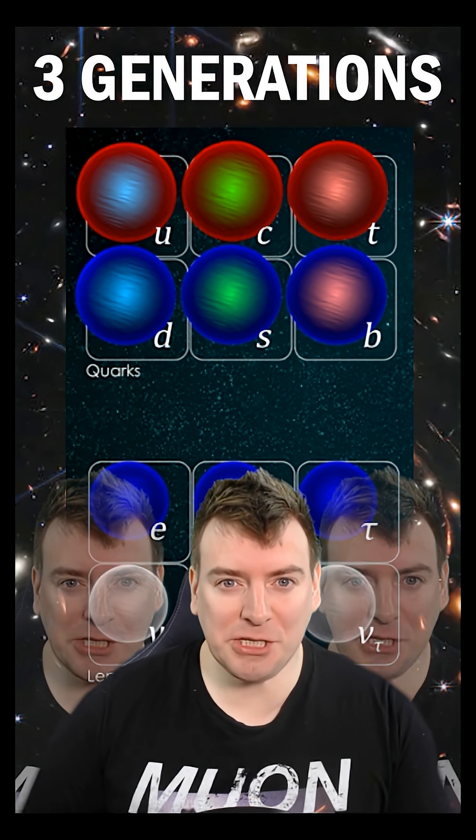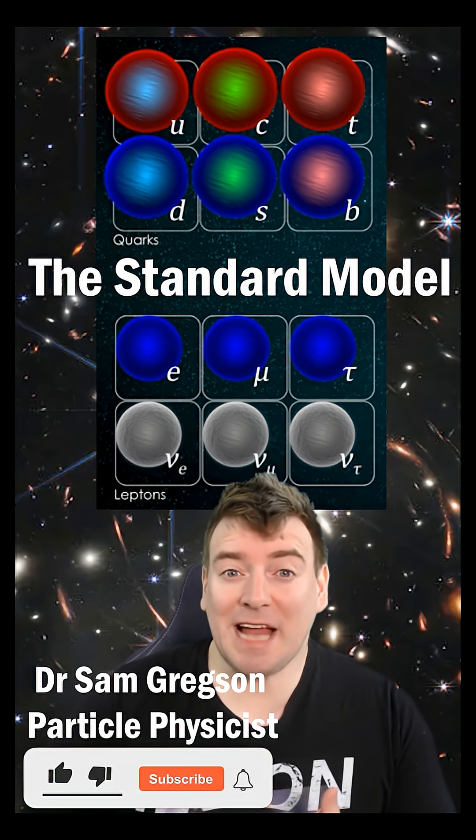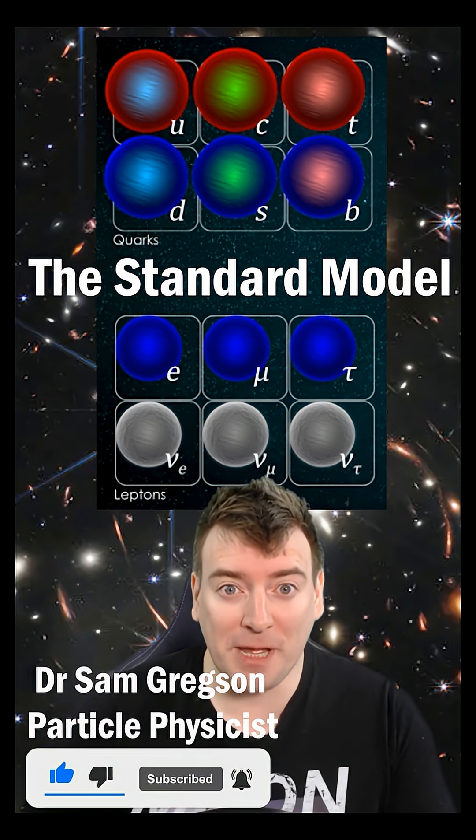Scientists have no idea why nature comes in triplicate. In the standard model of particle physics, matter is described by point-like particles called fermions.